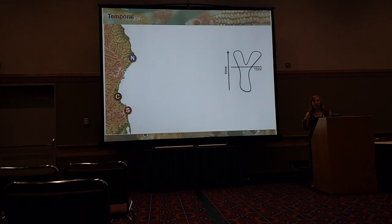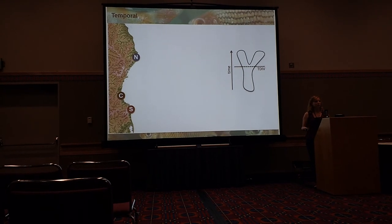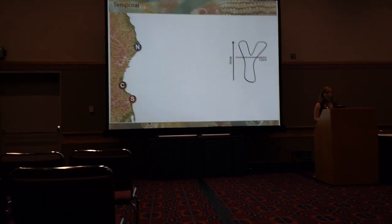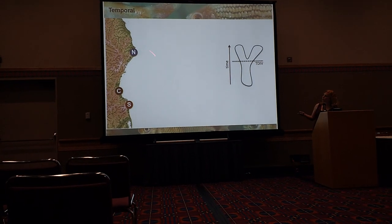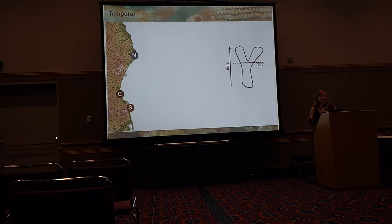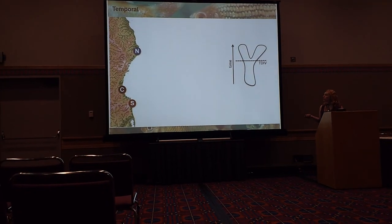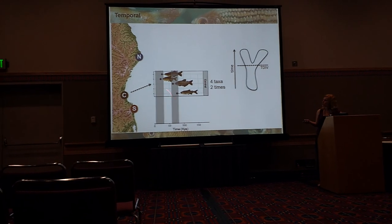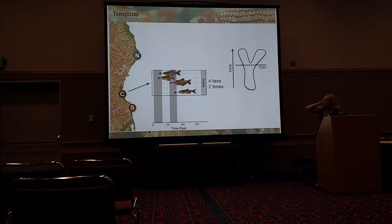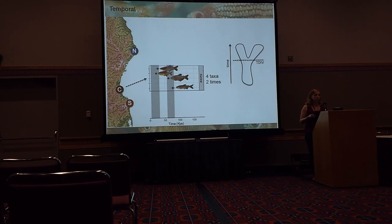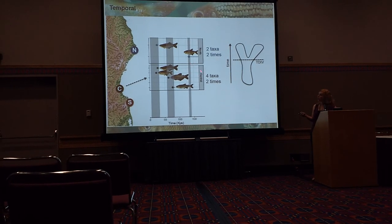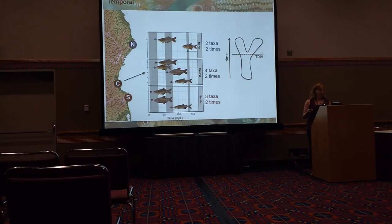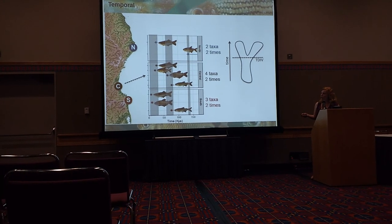Besides the spatial structure, do we see congruence in the divergence patterns between these species? What I did was, per break and per species, run a coalescent analysis to estimate divergence time using a strict isolation model. For the central break, across the four taxa that show this break, we see around two divergence times. For the northern break, we observe two divergence times for the two taxa that have the break. And for the southern break, among the three taxa, we also observe two divergence times.